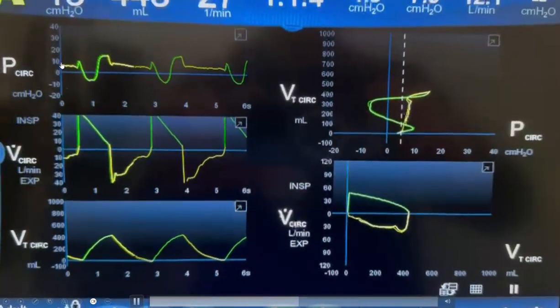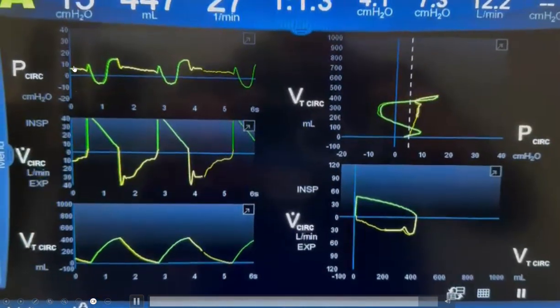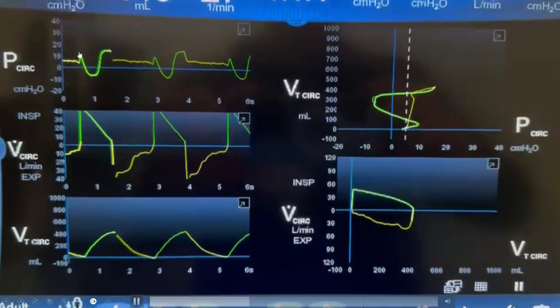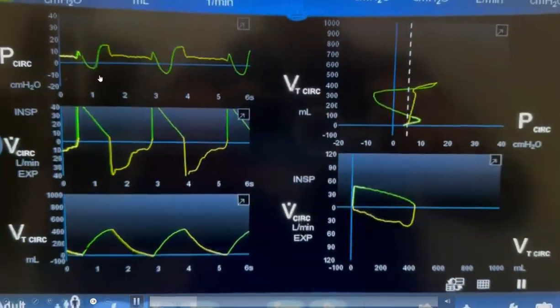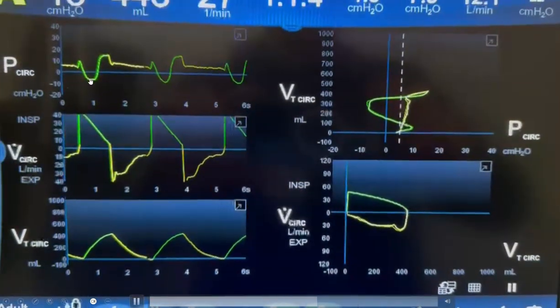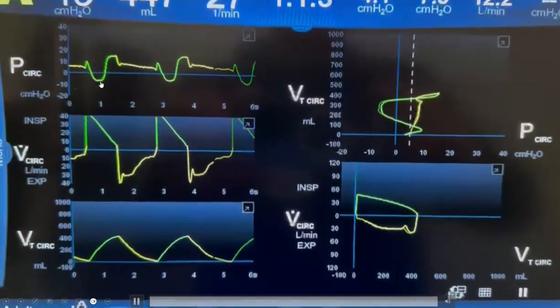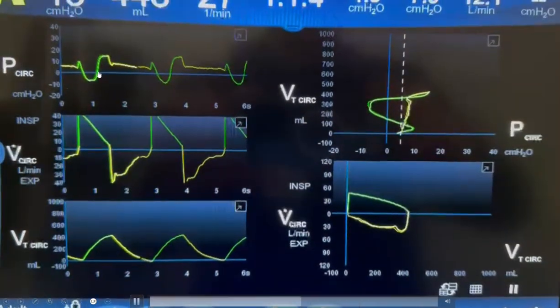The PEEP level is at 8 centimeters of water, and then after that what you see is a drop in the inspiratory pressure. It goes down all the way to minus 7 or minus 8 centimeters of water.